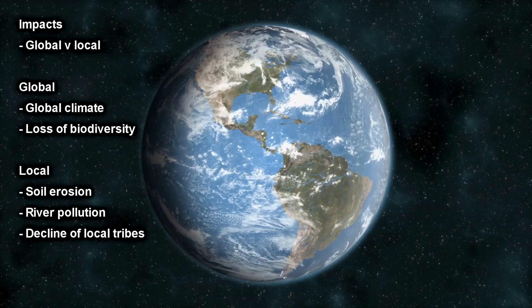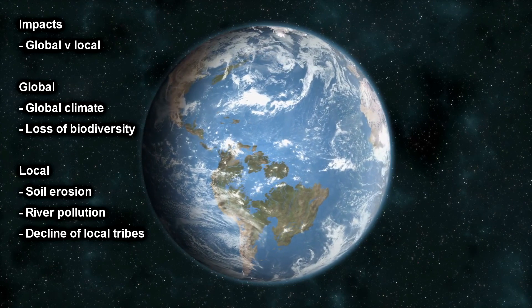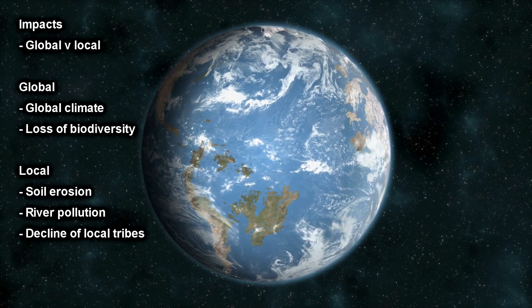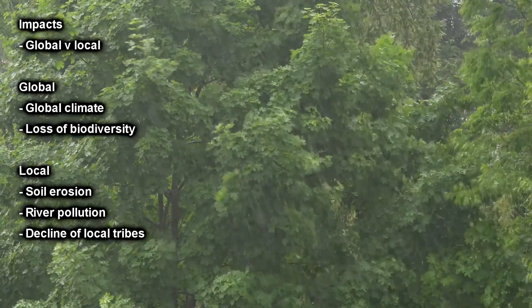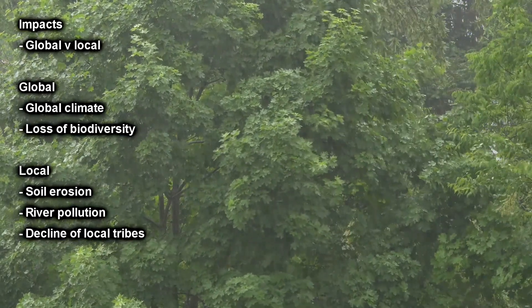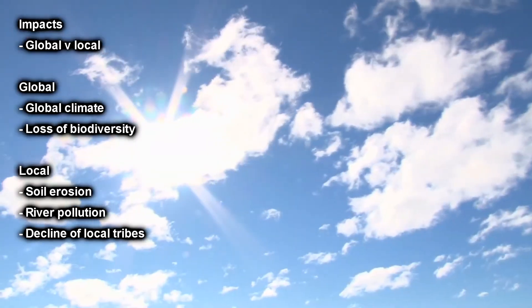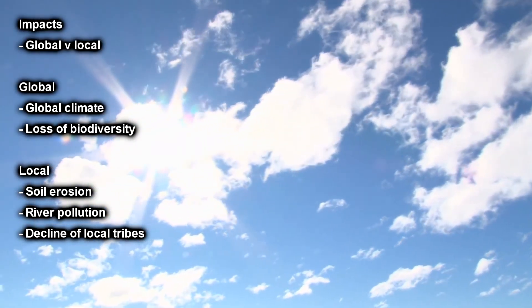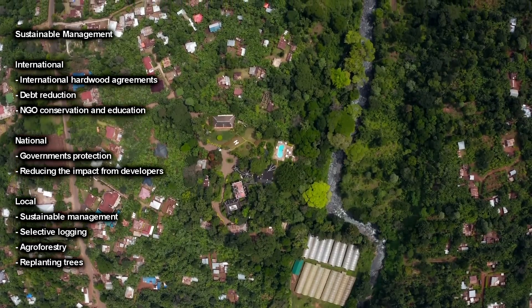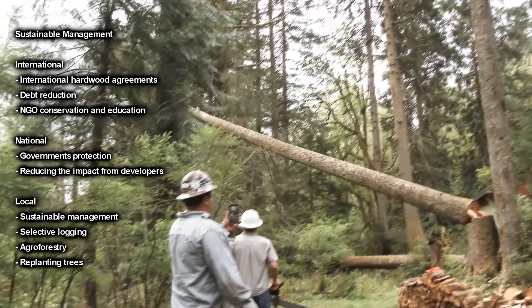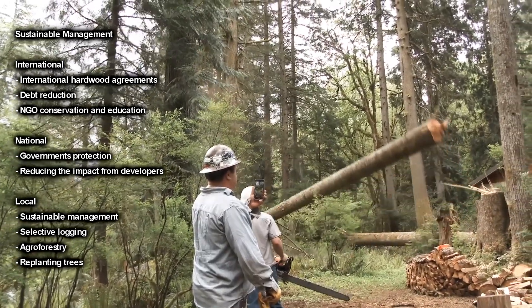We then looked at the impacts — what deforestation actually affects in the world and in local communities. This included the difference between global and local impacts of deforestation, the loss of biodiversity, soil erosion, and pollution. We then looked at the sustainable management of the rainforest and what international, national, and local communities can do to protect it.